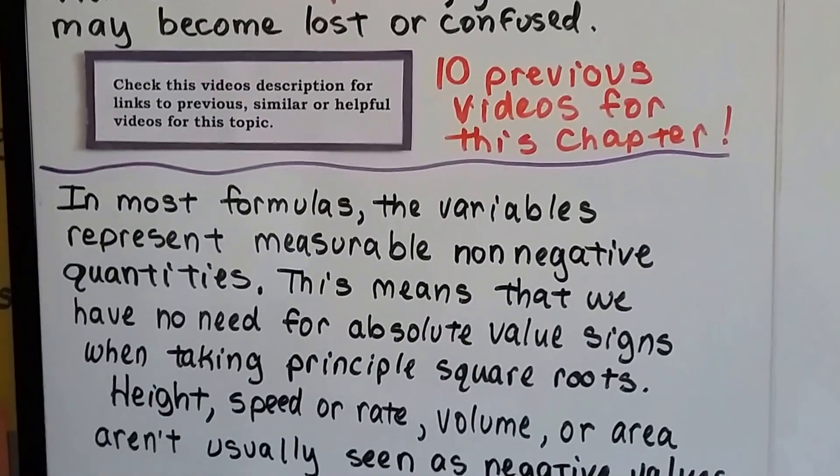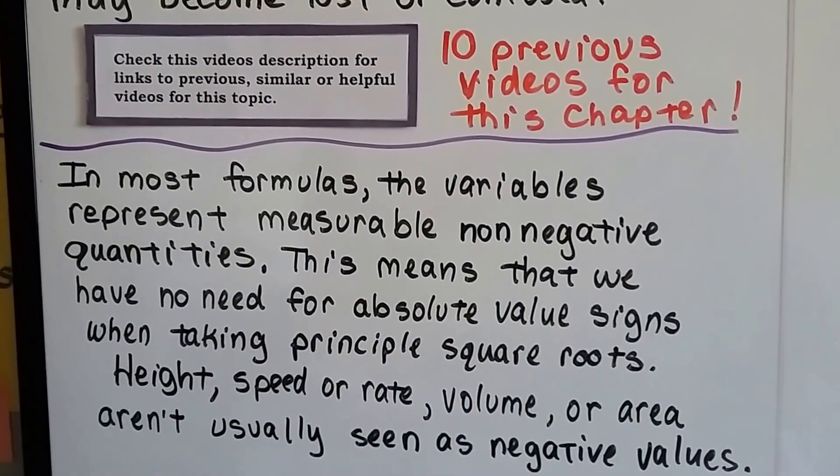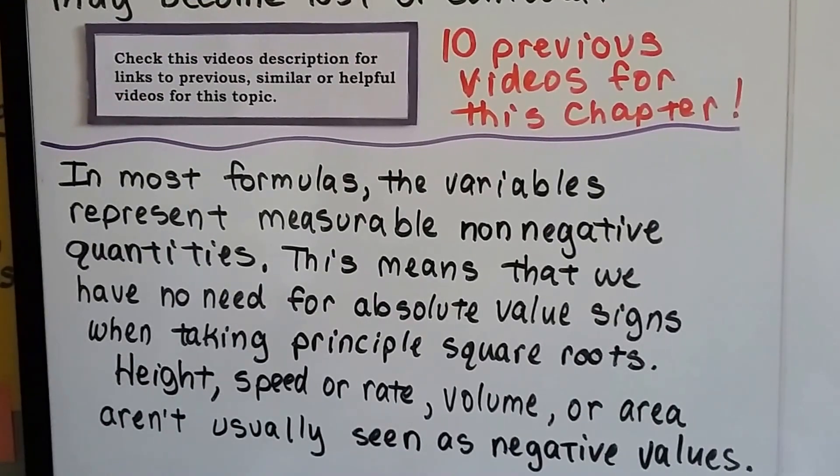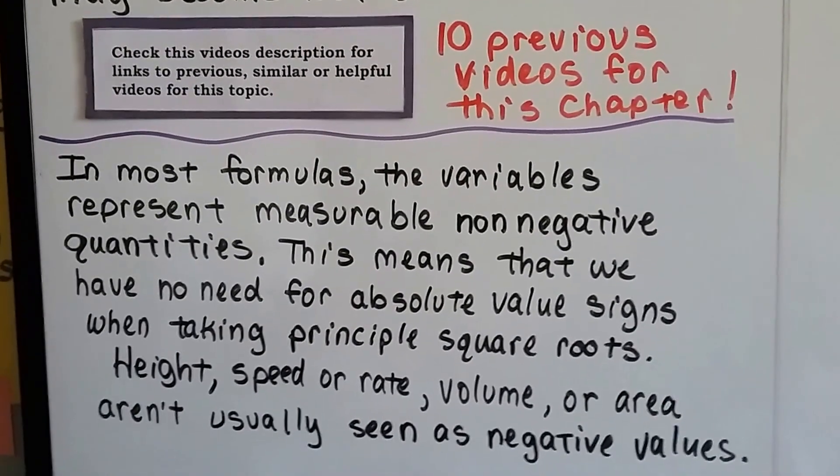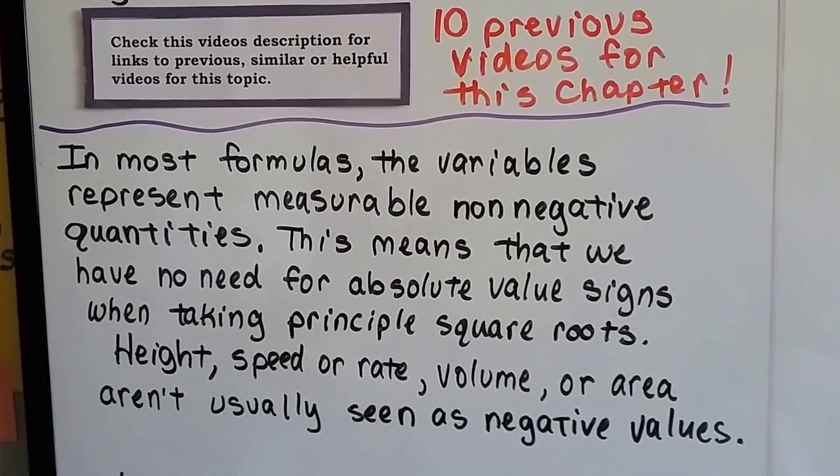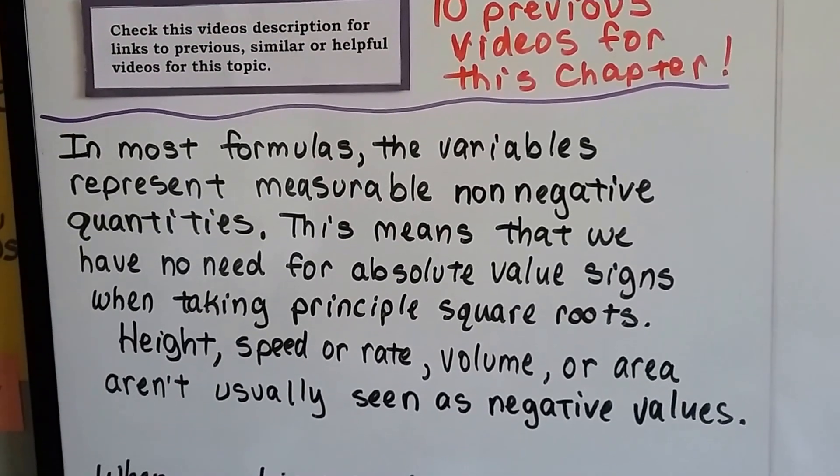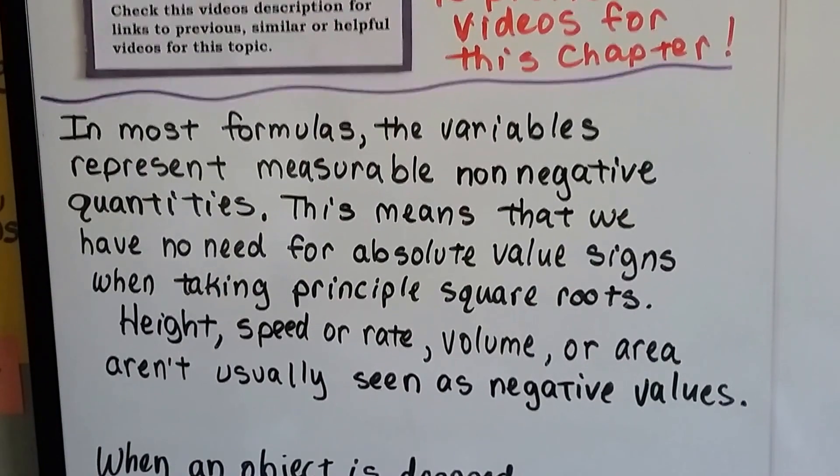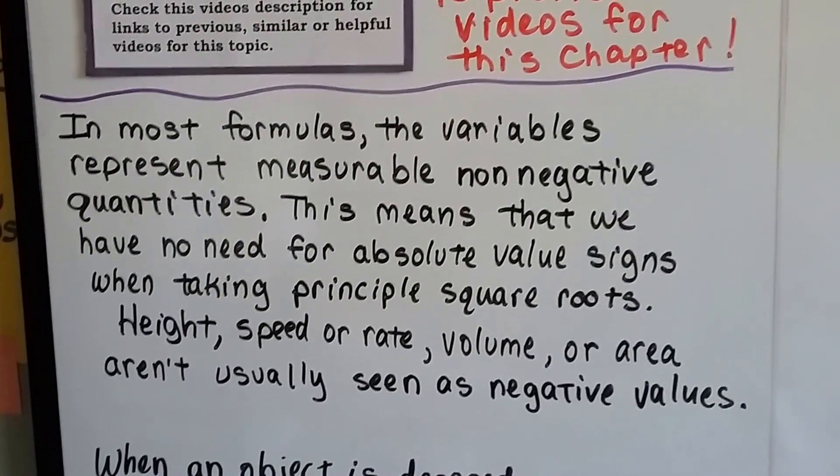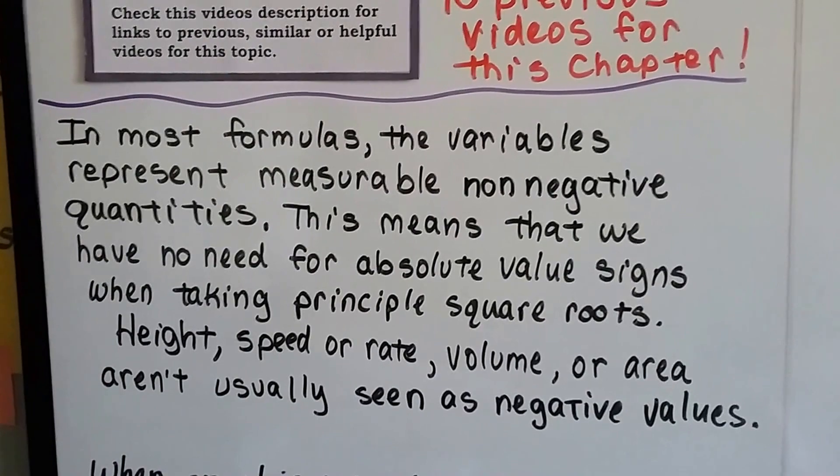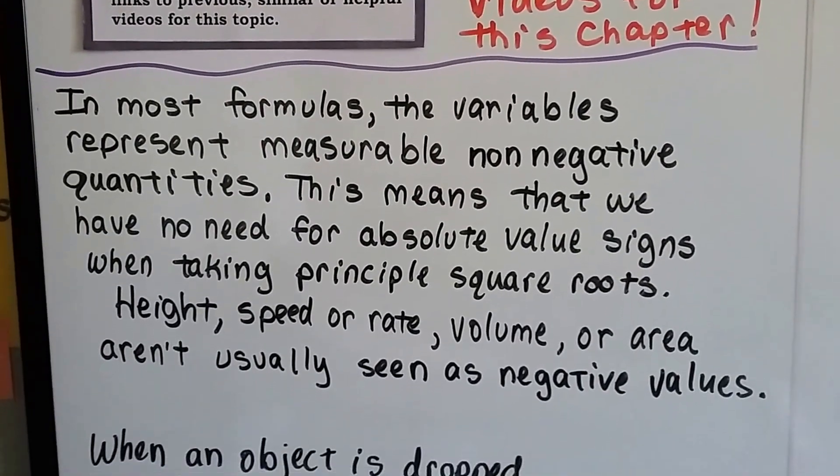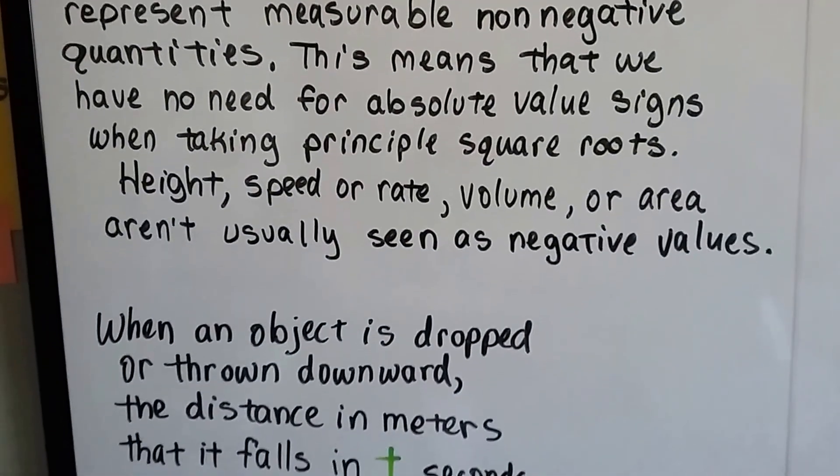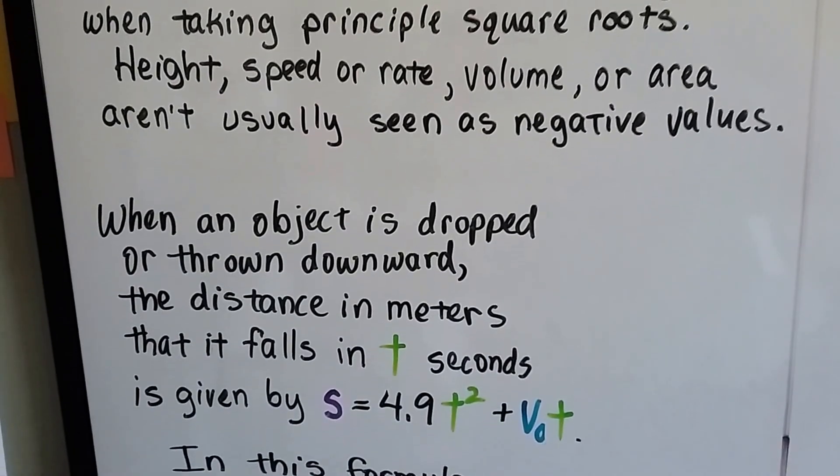In most formulas, the variables represent measurable, non-negative quantities. This means that we don't have a need for absolute value signs when taking principal square roots. Height, speed or rate, volume, or area aren't usually seen as negative values. If it tells you to find the volume of something, it's not going to be a negative amount, right?